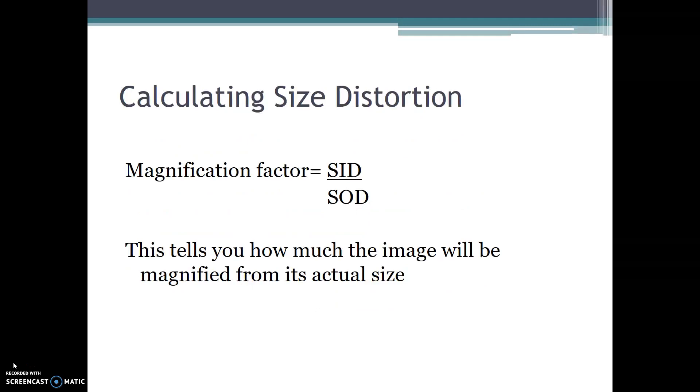To calculate size distortion, we use the magnification factor formula, which is SID divided by SOD. This tells you how much the image will be magnified from its actual size.